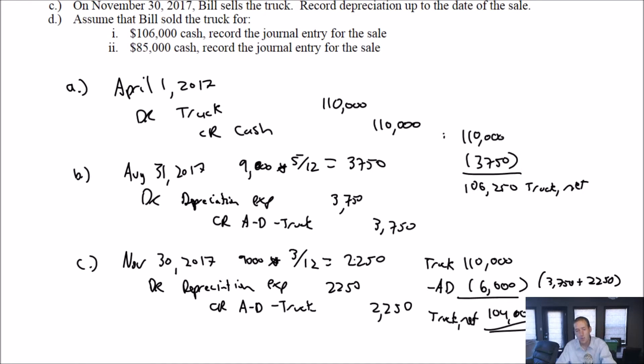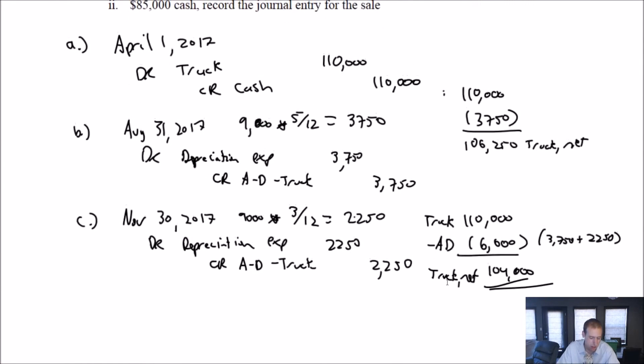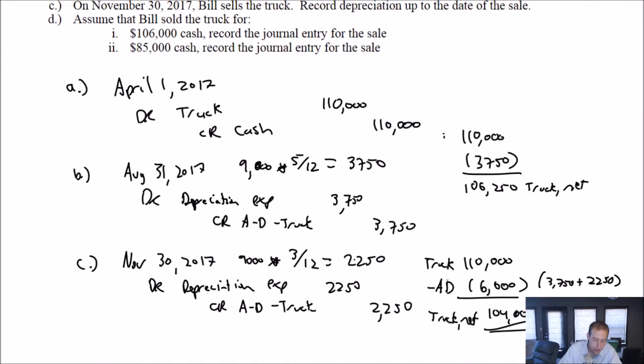Okay. So, so far up to here, nothing really new. I mean, a couple of partial year amortization entries, but nothing crazy new. Now something new. Assume, so part D, part I. We'll look at part I in a second. Assume Bill sold the truck for $106,000 cash. Record the journal entry for the sale.